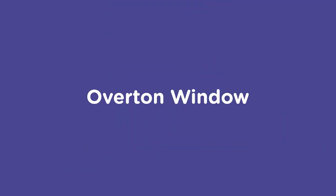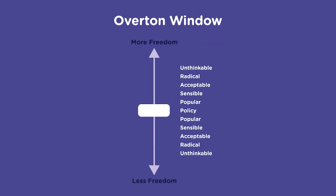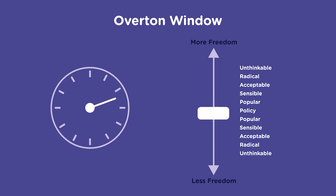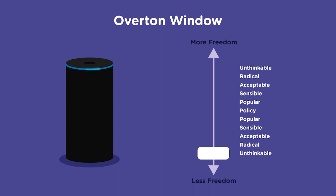The term Overton Window explains this phenomenon. An Overton Window is the range of policies deemed acceptable to the mainstream population at a given time. A few decades ago, putting a listening device in your living room would have felt extreme, as if you're wiretapping yourself. But now that voice-activated devices are so common, it's normalized — although it's still a bit creepy if you really think about the implications.